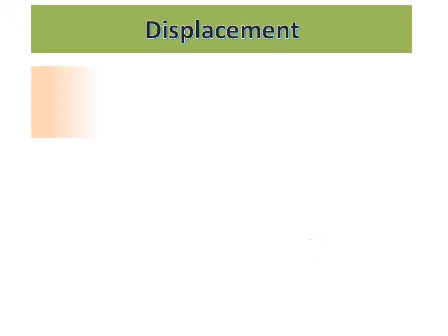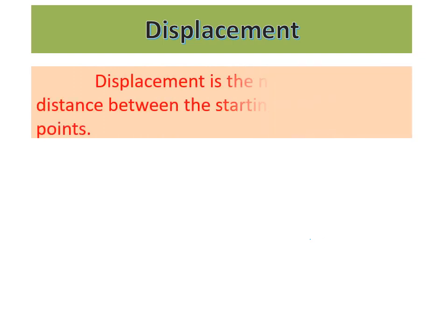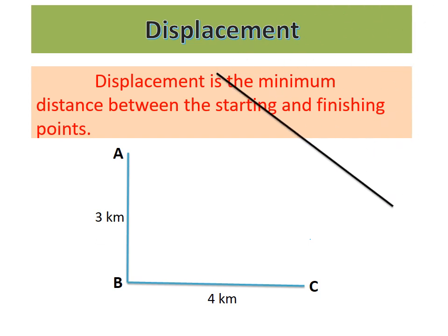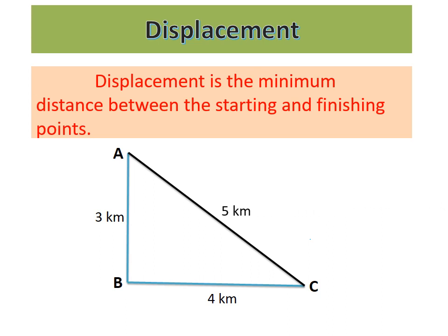The next concept is displacement. Displacement is nothing but the minimum distance between the starting and finishing point. For example, when that object covers a total distance of 7 km travelling from point A to B and B to C, the displacement is the minimum distance from its starting point to the finishing point — that is 5 km only.